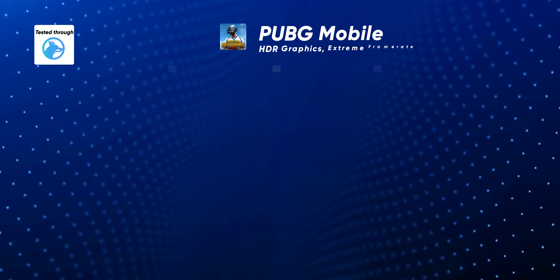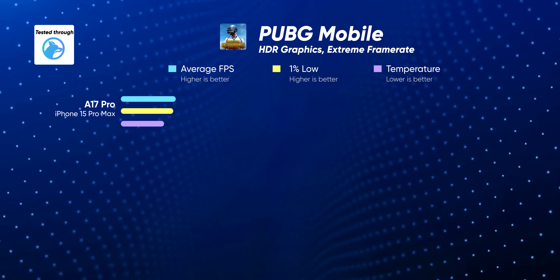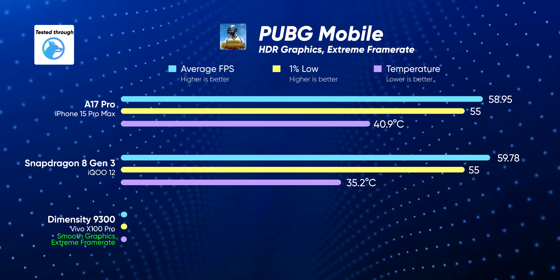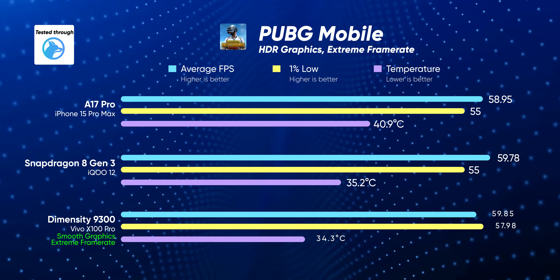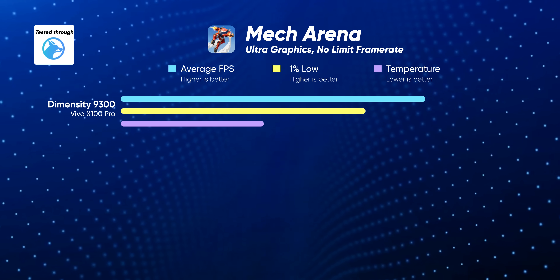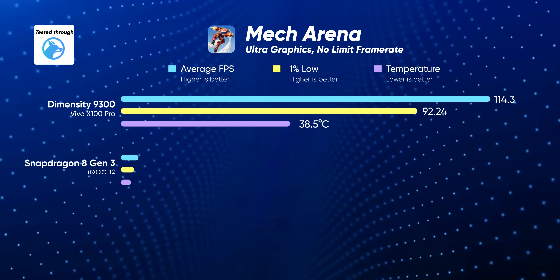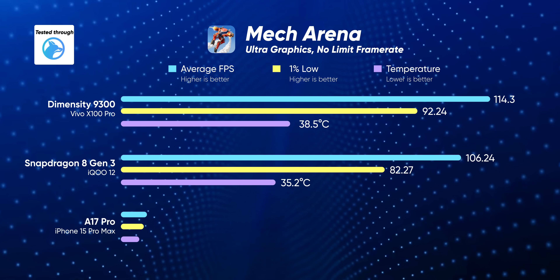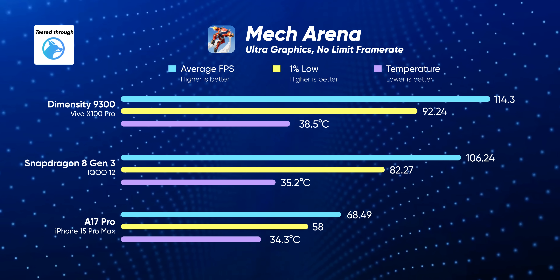Next I tried PUBG Mobile, where the iPhone 15 Pro Max and the iQOO 12 delivered smooth 60fps gameplay at HDR graphics, but the Vivo X100 Pro was limited to basic graphics options to hit 60fps. This is not a big concern since it's only a matter of time before Dimensity 9300 gets better game developer optimization. I was pleasantly surprised to see Mech Arena already optimized to play at 120fps on the Dimensity 9300 — in fact, the Vivo X100 Pro had a better average and 1% low FPS than the iQOO 12, whereas the iPhone still cannot play this game beyond 60fps.